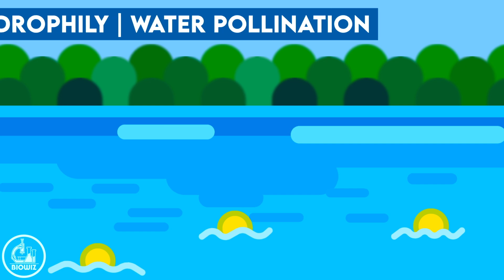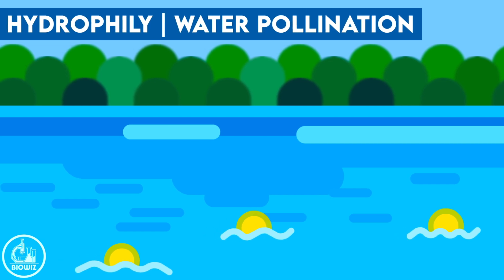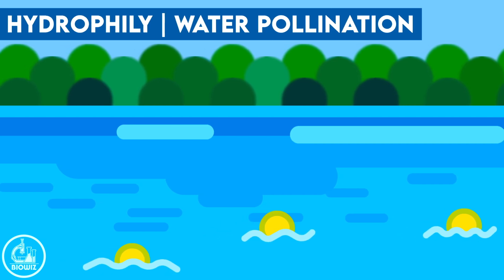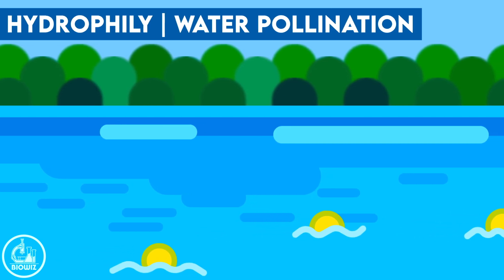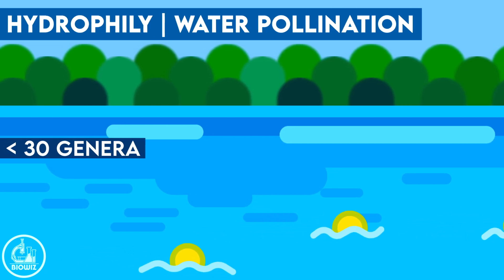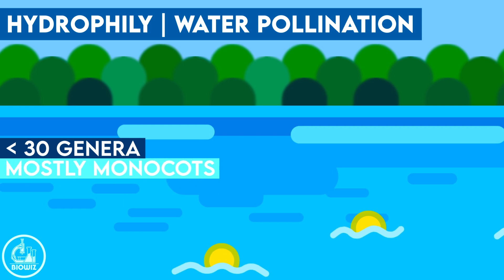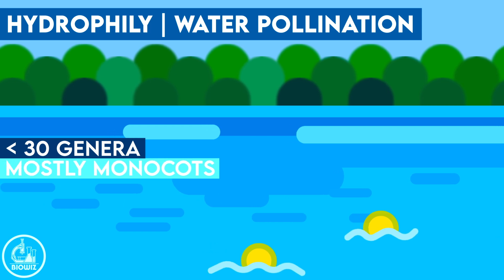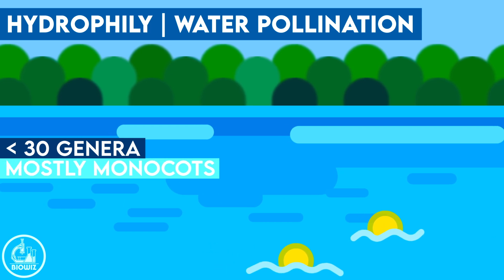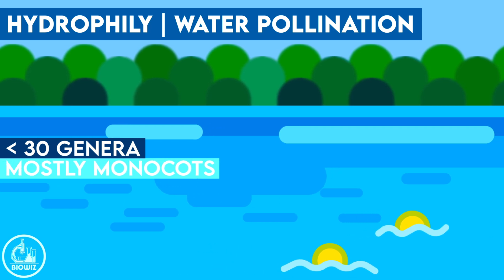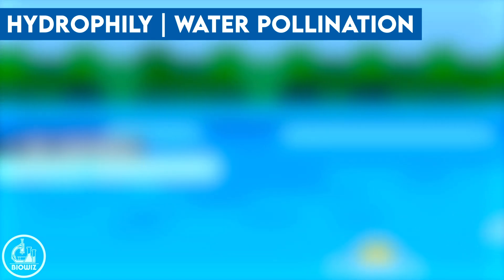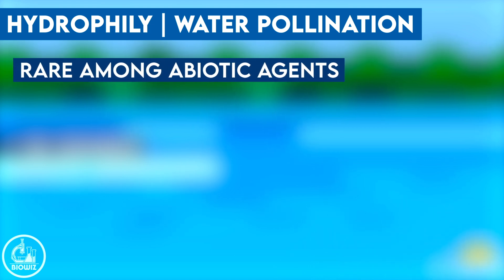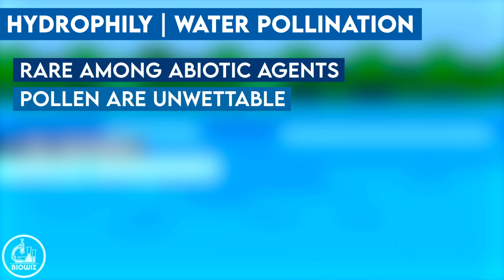Water pollination or hydrophily is a rare type of pollination and it is recorded in less than 30 genera of angiosperms, mostly belonging to monocots. Pollen of water-pollinated plants is surrounded by a mucilage layer to make it unwettable.